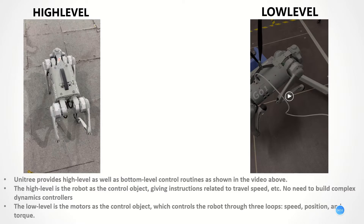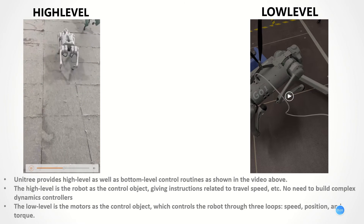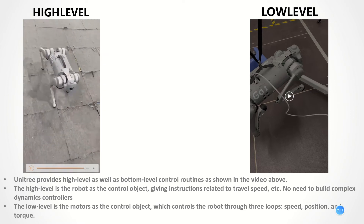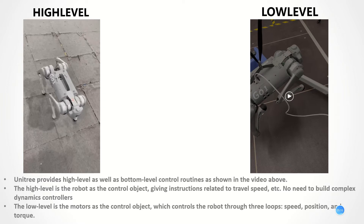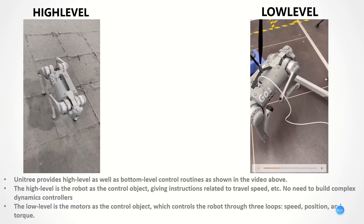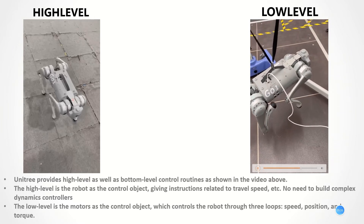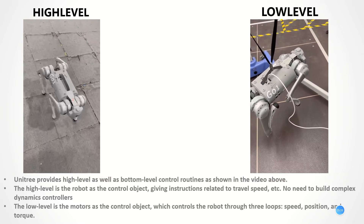The next part is about routine analysis. In this video, the robot dog is controlled by high level. The high level means the robot dog can be viewed as an object — you can give instructions such as speed directly to it, with no need to build complex dynamics controllers. This video shows low level. The low level means the motors can be viewed as objects which control the robot dog through three loops: speed, position, and torque.